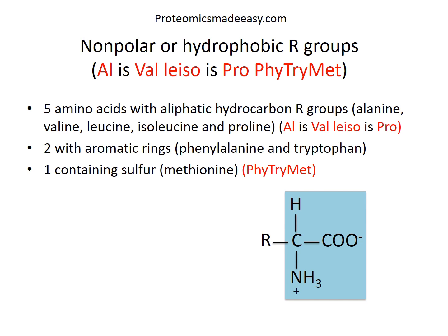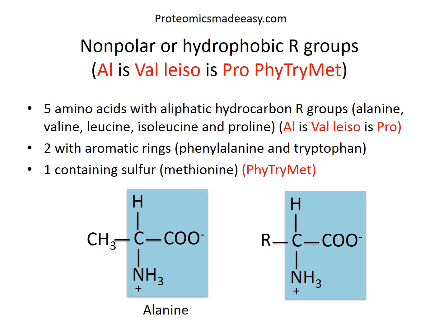Out of these eight amino acids, alanine is the least hydrophobic and hence it is the borderline between non-polar amino acids and those with uncharged polar R groups. In alanine, the R group is only a methyl group, placing it at the borderline in the properties of this category.